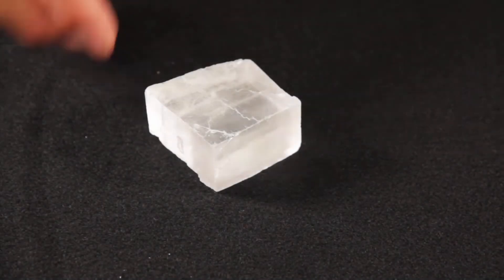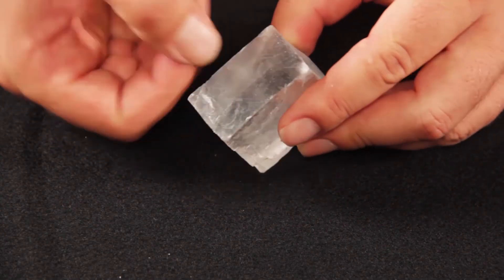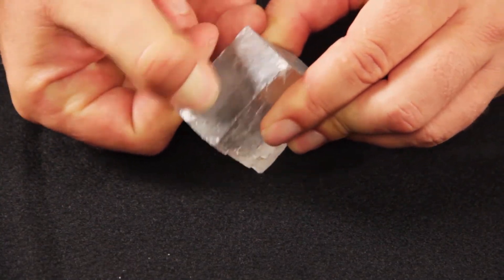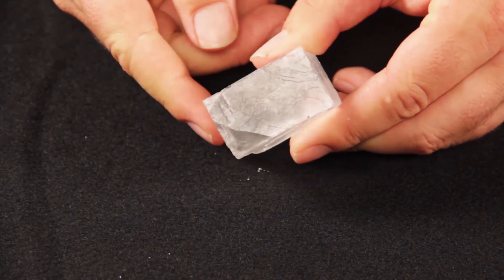When we attempt to scratch the halite crystal with a fingernail, which has a hardness of 2.5, we find that the fingernail does not scratch it. This would indicate that the halite's hardness is above 2.5.